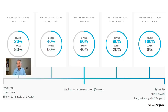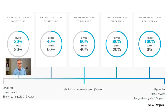Here are the Life Strategy Funds available to UK investors. There are five of them. The one at the top is the one with least risk, and that's also consistent with a shorter-term goal. Why is that?